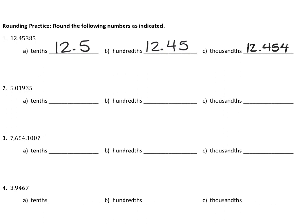For the next one, the tenths spot is just one decimal — 5.0 or 5, those are the same. The hundredths would be 5.02. If rounding to the thousandths, keeping three decimals, that should be 5.019. The next line for the tenths is 7,654.1. For the hundredths, 7,654.10.